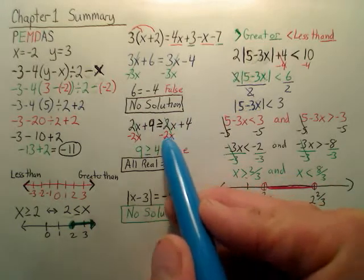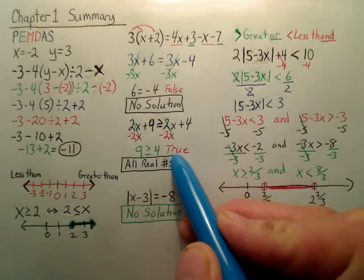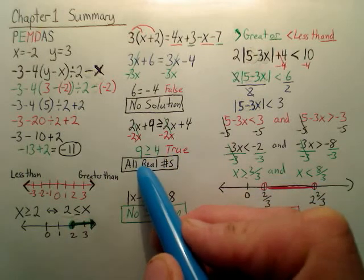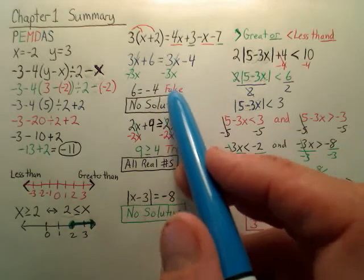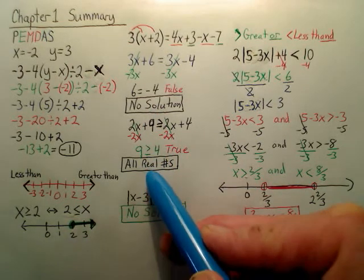But here, we have an inequality. All the x's disappeared, but what's left over is true. So if what's left over is true, that is all real numbers. Everything works. So again, if x's all drop out, if it's false there's no solutions. If it's true, everything works. No matter what you plug in, it should work.